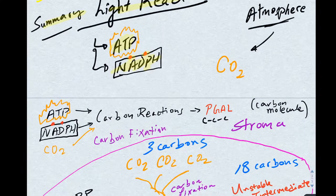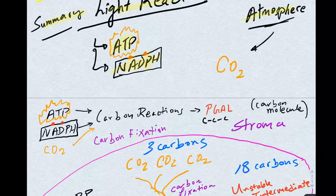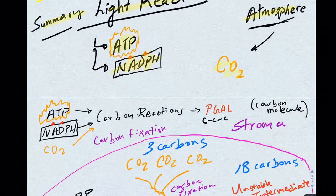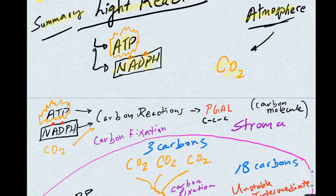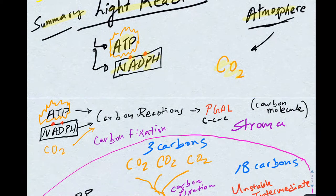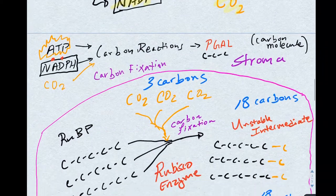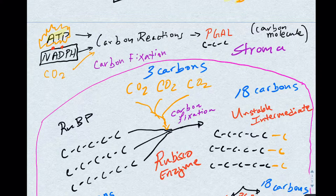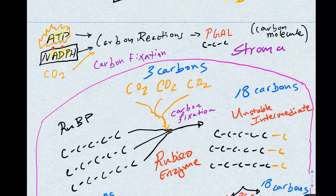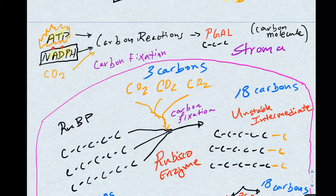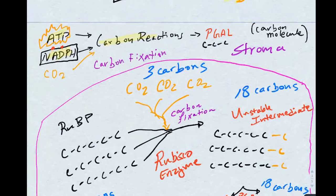In the next step of photosynthesis, we will see how atmospheric carbon dioxide is converted into a precursor to a sugar molecule. The ATP and NADPH from the light reactions will power what is called the carbon reactions.